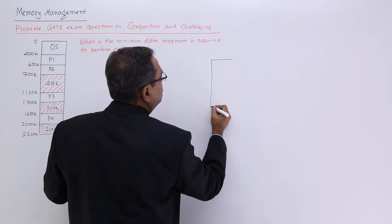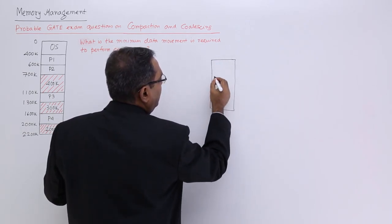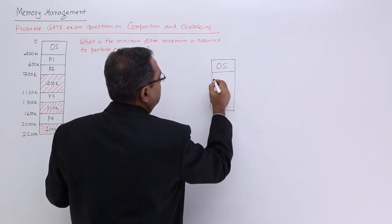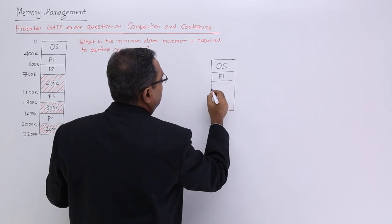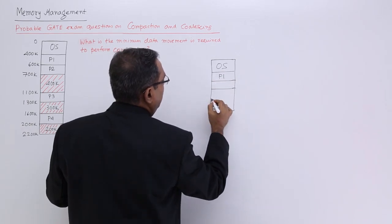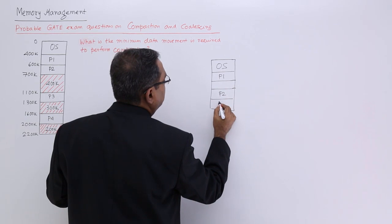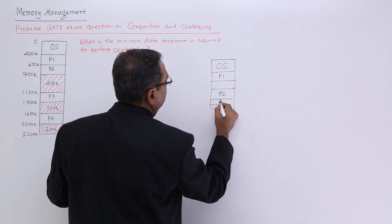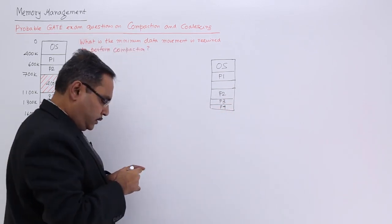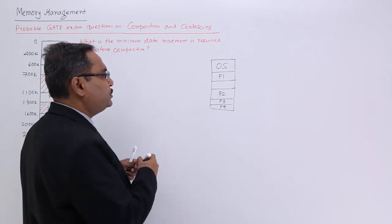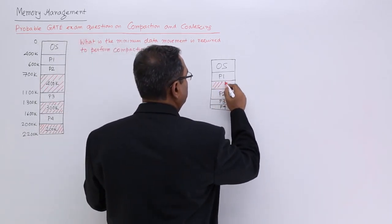So, coalescing means, let us suppose this is the memory. So, only this is occupied by OS, this is occupied by P1, that is a free space here and then we are having P2 and then say P3 and P4, okay. So, here we are having only one memory space back end, so let this one.